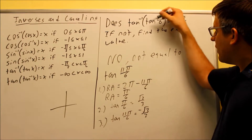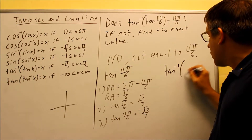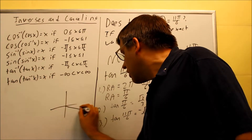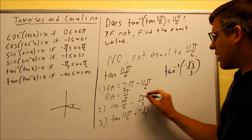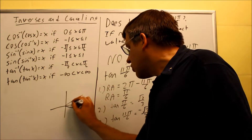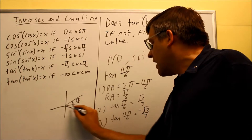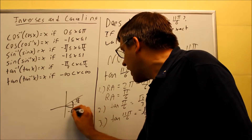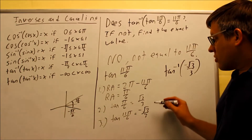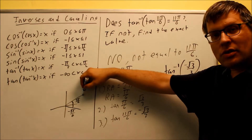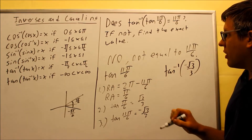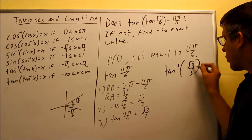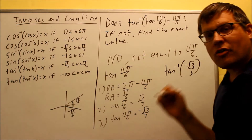Now I want to find the inverse tangent of negative √3/3. Looking at the angle associated with that: this angle is actually our reference angle, but going negative instead of positive. Normally I have 11π/6 down here in the fourth quadrant, but going the negative direction, that angle would be negative π/6.